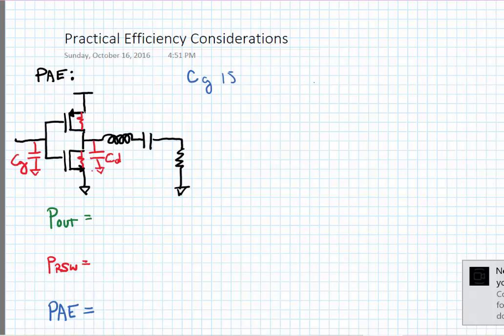The gate capacitance in a Class D amplifier is bigger than in the other switching PA topologies because we're switching two transistors, the PMOS and the NMOS, and in principle the PMOS has to be larger than the NMOS.